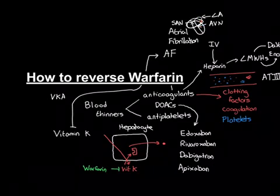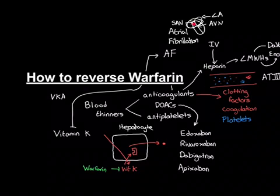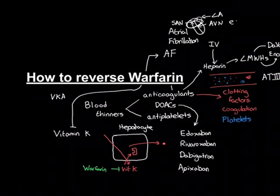If the valve is dodgy and blood is leaking back from the left ventricle to the left atrium, that will massively raise pressures inside the left atrium and lead to left atrial dilatation. If you get dilatation of the left atrium, then this atrium can start doing very dodgy things electrically — it can start sending off signals of its own to initiate contraction, instead of the electrical activity initiating from the sinoatrial node. These will be called ectopics.